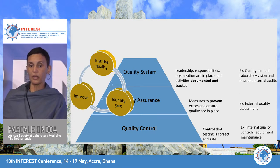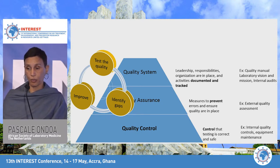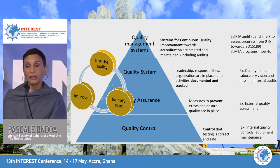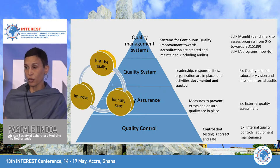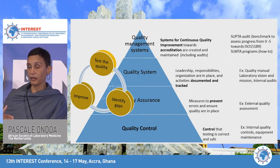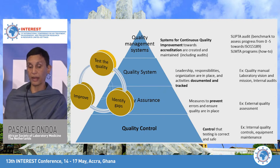This is really a cycle — all the time for quality system and quality assurance you test the quality of your process or test, identify the gaps, improve, and start again. Finally, you have the quality management system, where you ensure continuous quality improvement of your lab towards accreditation. The SLIPTA program, which provides a benchmark to assess progress towards ISO requirements, and SLIPTA training, are very important in this regard.